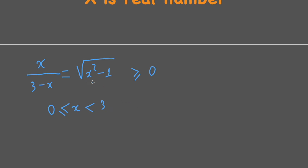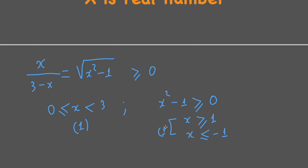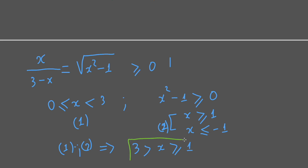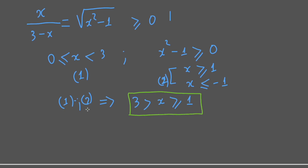On the right hand side we have x squared minus 1, which has to be greater than or equal to 0. That means x is greater than or equal to 1, or x is less than or equal to negative 1. Combining both conditions, from condition 1 and condition 2, x must be between 1 and less than 3. So the domain of x we have to consider is [1, 3).